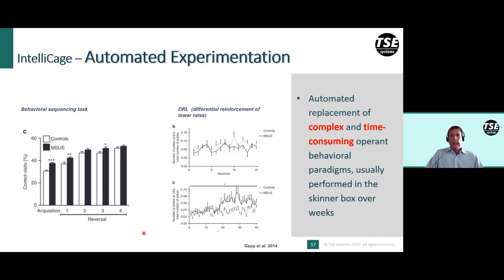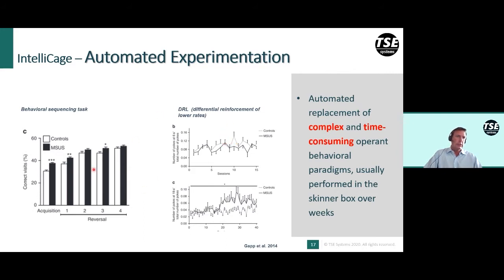In addition, very complex and time-consuming operant conditioning tasks, such as behavioral sequencing tasks and DL tasks that usually take months in the classical Skinner box, can be automated in the IntelliCage. For instance, a study published by the group of Isabel Mansuy used maternally separated and unpredictable stress mice for these really complex operant conditioning tasks.